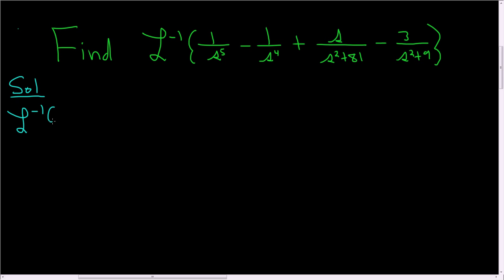So the inverse Laplace of n factorial over s to the n plus 1, this guy is equal to t to the n. And then the inverse Laplace of s over s squared plus k squared, this is equal to cosine kt.